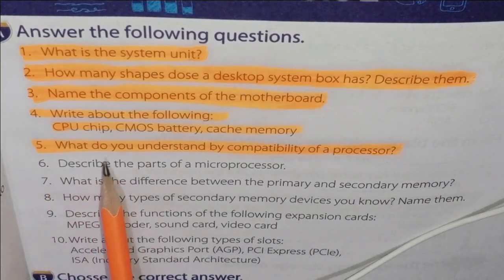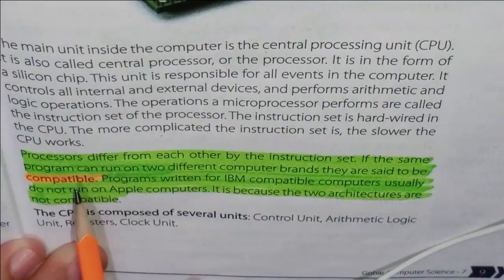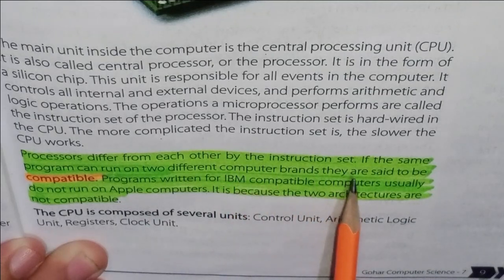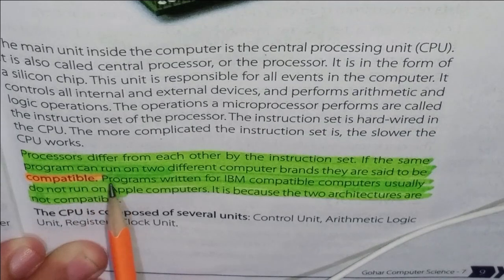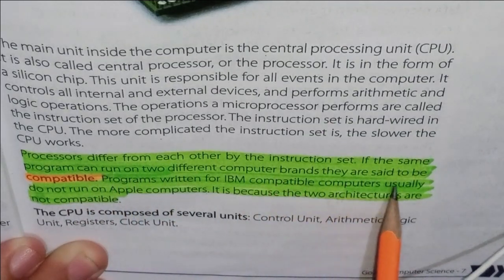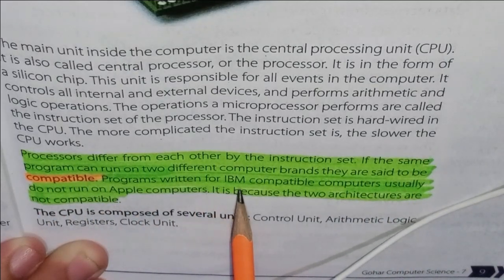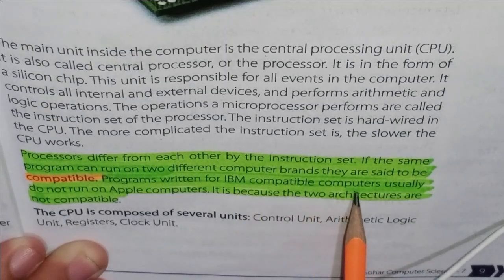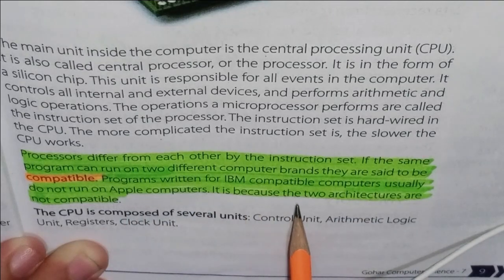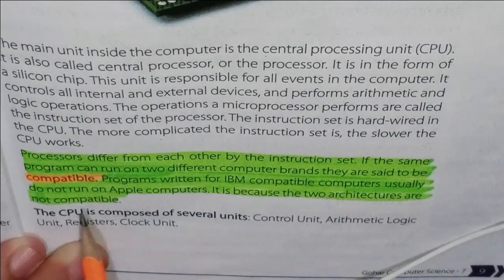Question No. 5: What do you understand by compatibility of a processor? Processors differ from each other by the instruction set. If the same program can run on two different computer brands, they are said to be compatible. Programs written for IBM compatible computers usually do not run on Apple computers, because the two architectures are not compatible.